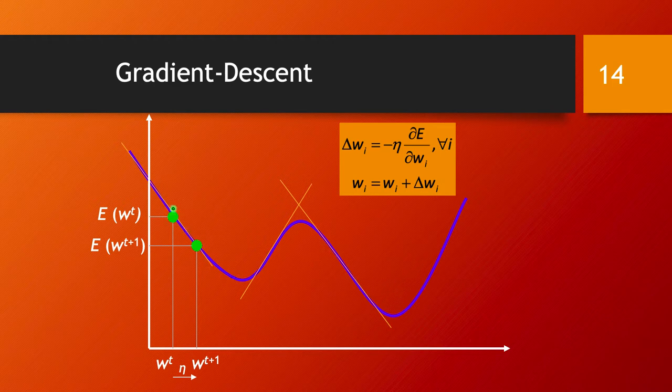If we think about this point here, the error at this point W, and if our error function is like this, this is a descending slope. The partial derivative of the error with respect to W at this point is going to be negative because it's a descending slope.